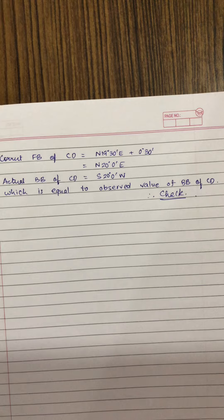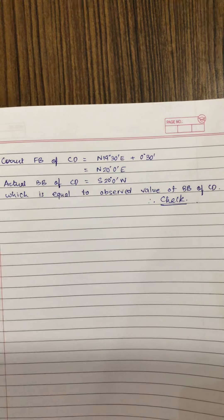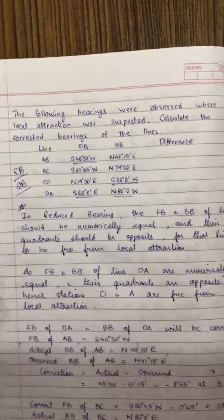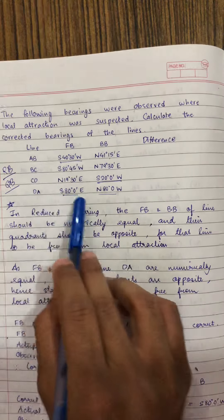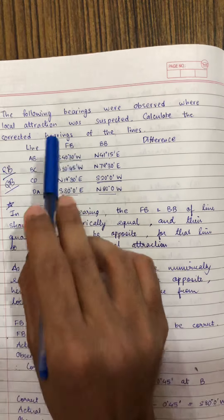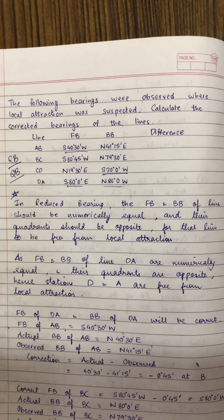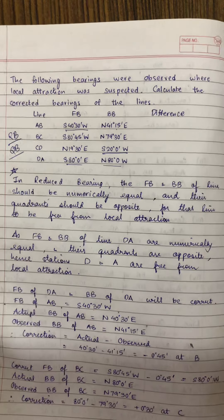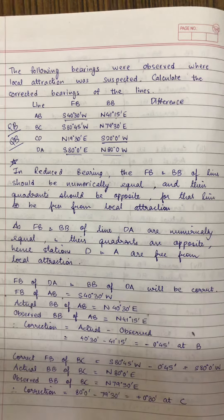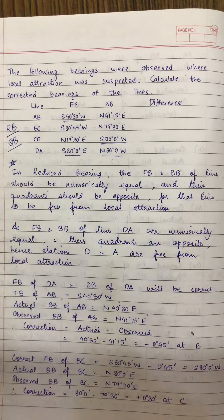This is how you solve problems on local attraction when reduced bearings are provided. If whole circle bearing is provided, the method is different. But when reduced bearing is provided, this is the method you have to apply.